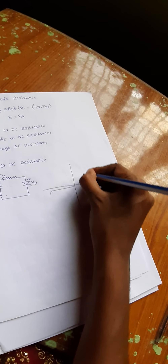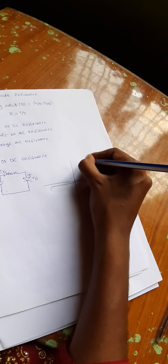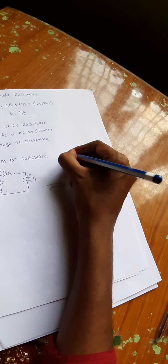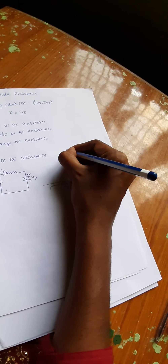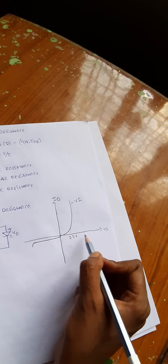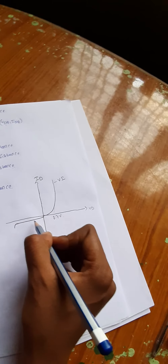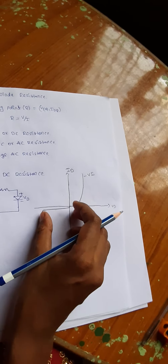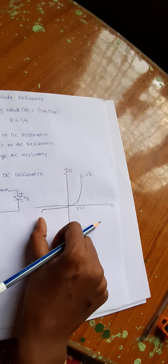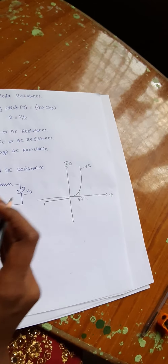The VI characteristics of a diode: this axis is Id and this axis is Vd. At 0.7 volts for silicon, if you consider the same scale for forward bias and reverse bias, the VI characteristics of the diode look like this.